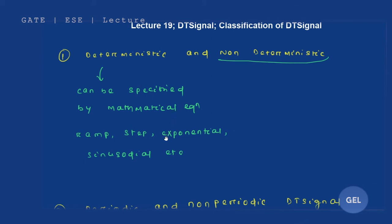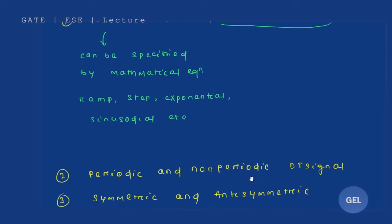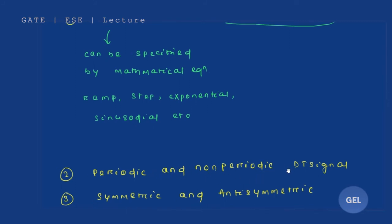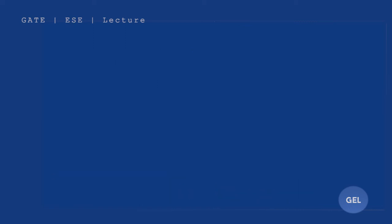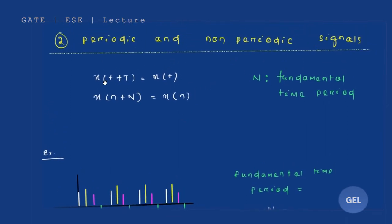Now let's get into periodic and non-periodic discrete time signals. There are several methods to find out periodicity and non-periodicity, but I'm going to follow the old school method to make you understand. I could show you a shortcut, but I don't want you to apply it in this subject because that shortcut doesn't always work. So I'm only going to teach you the old school method for periodicity and non-periodicity of discrete time signals.